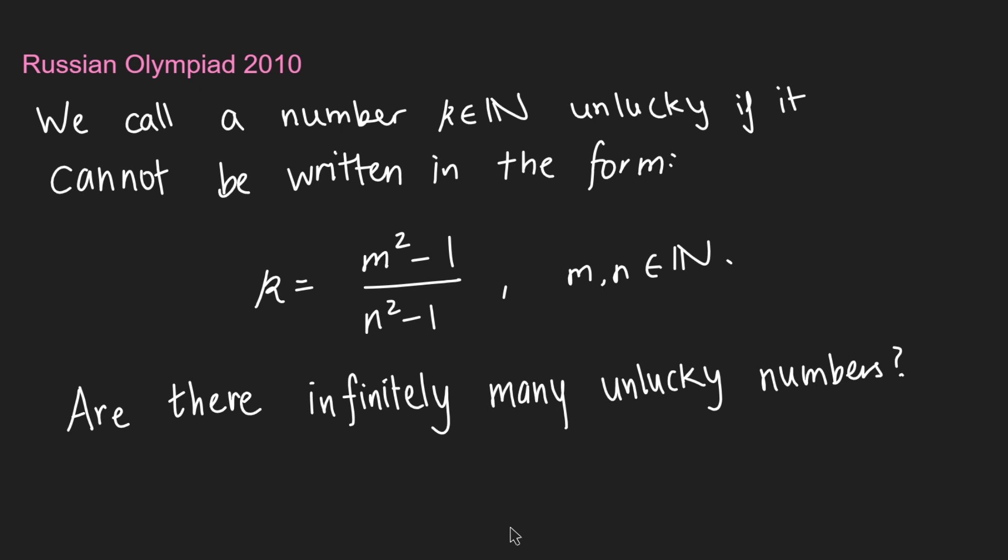We call a positive integer k unlucky if it cannot be written in this form. So k would be equal to m squared minus 1 over n squared minus 1, where m and n are positive integers. We want to know, are there infinitely many unlucky numbers? In other words, are there infinitely many positive integers which cannot be written in this form here?